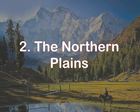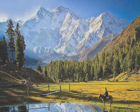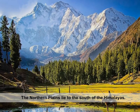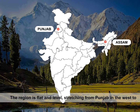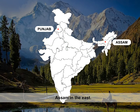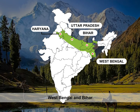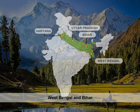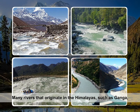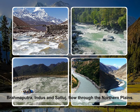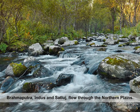Chapter 2: The Northern Plains. The northern plains lie to the south of the Himalayas. The region is flat and level, stretching from Punjab in the west to Assam in the east. The other states included in this region are Haryana, Uttar Pradesh, West Bengal, and Bihar. Many rivers that originate in the Himalayas, such as Ganga, Brahmaputra, Indus, and Satlaj, flow through the northern plains.